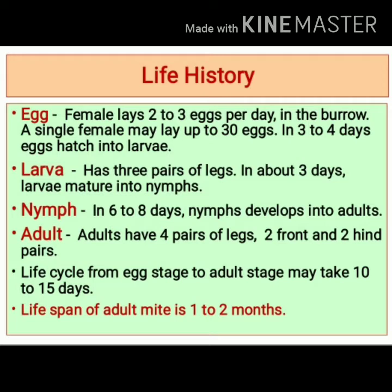The adult mite has four pairs of legs — two front pairs and two hind pairs. The time required for completion of the life cycle from egg stage to adult stage is about 10 to 15 days.